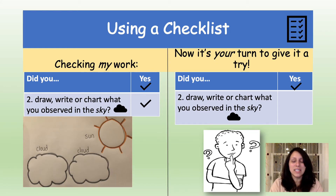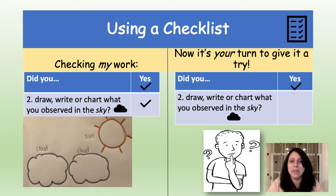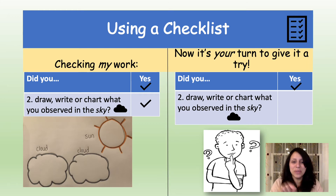The second part of the checklist asks: did you draw, write, or chart what you observed in the sky? Here's a sample of what I did in my journal entry. I drew the sun and the clouds because that's what I saw when I looked in the sky. I also labeled my picture — next to the picture of the sun, I wrote the word sun, and above the clouds, I wrote the word cloud. I gave myself a check because I did draw what I observed in the sky. Now it's your turn. Did you draw, write, or chart what you observed in the sky? If you did, you can give yourself a check mark.